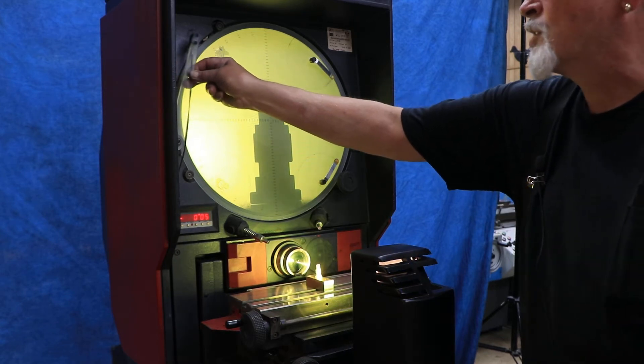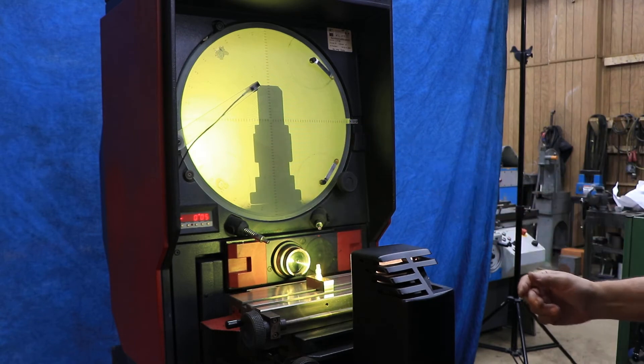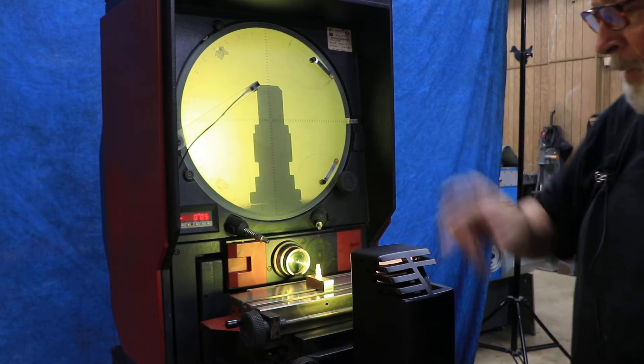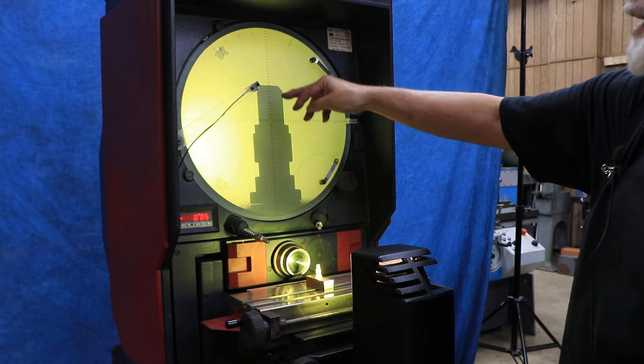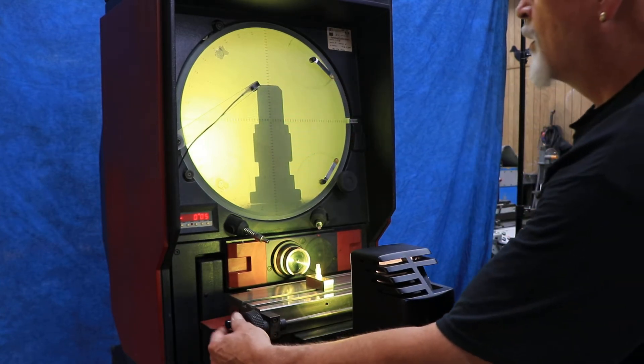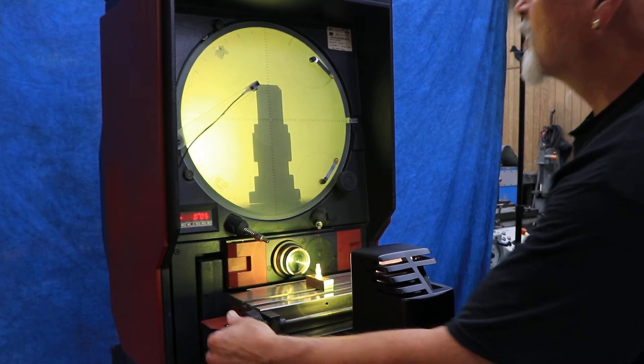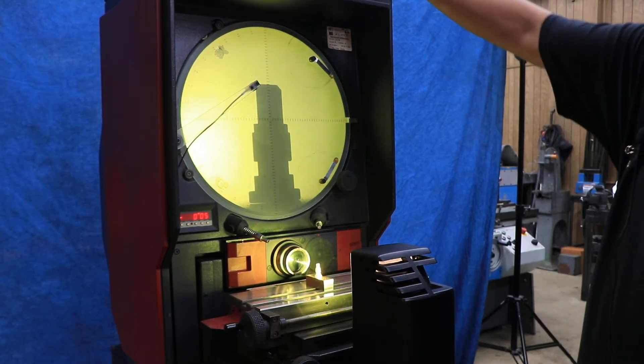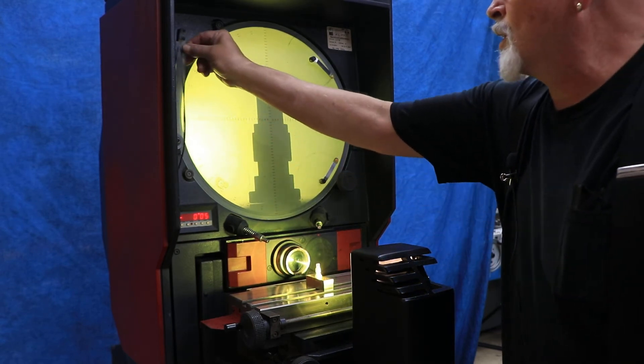We have a setup here for edge detection. There's a light pickup inside the lamp housing that can tell when it's going from a light spot to a dark spot as you move back and forth with your part. It stores that information once you familiarize yourself with using it. That's a very nice option to have.